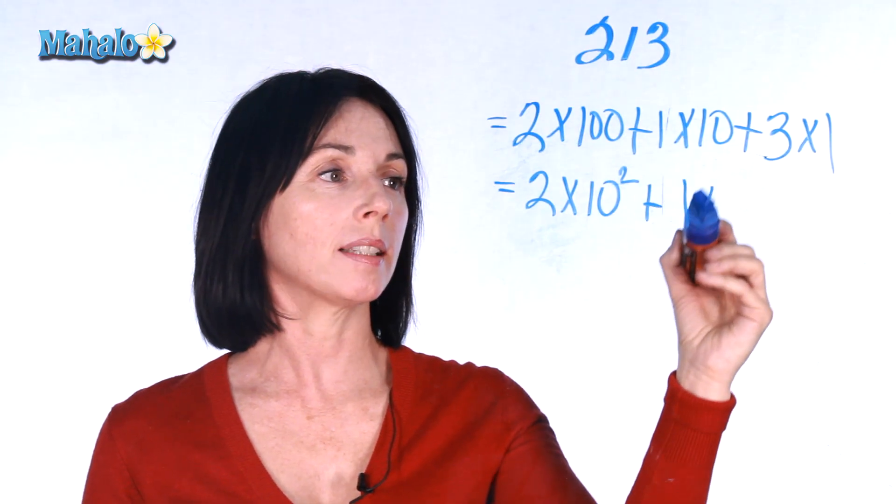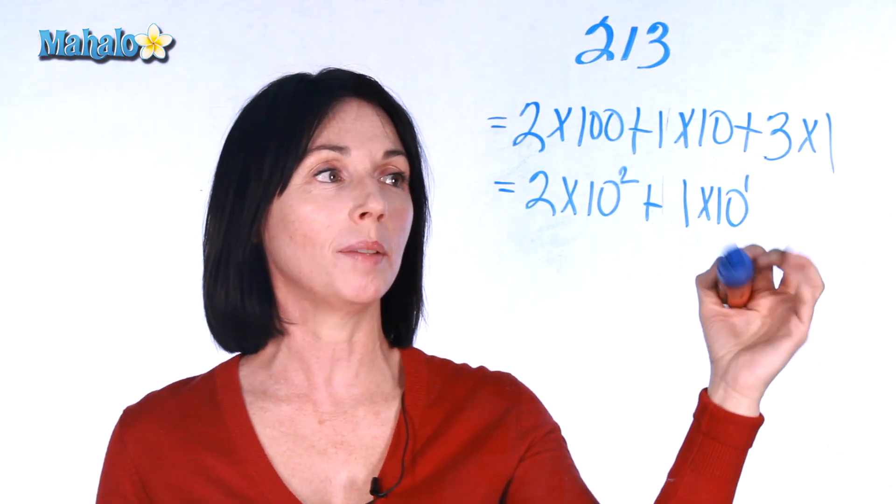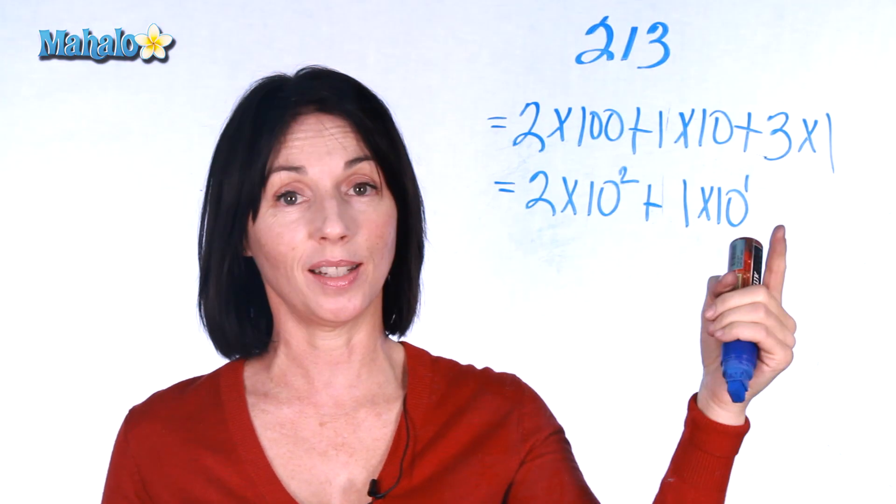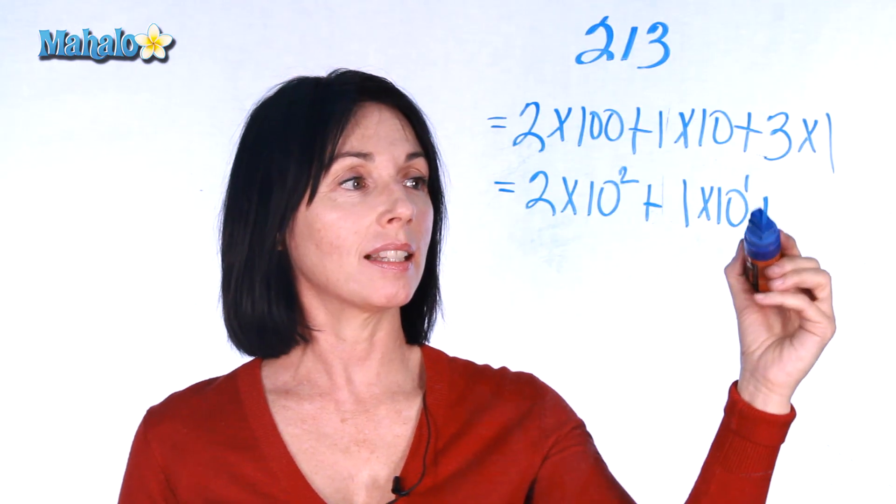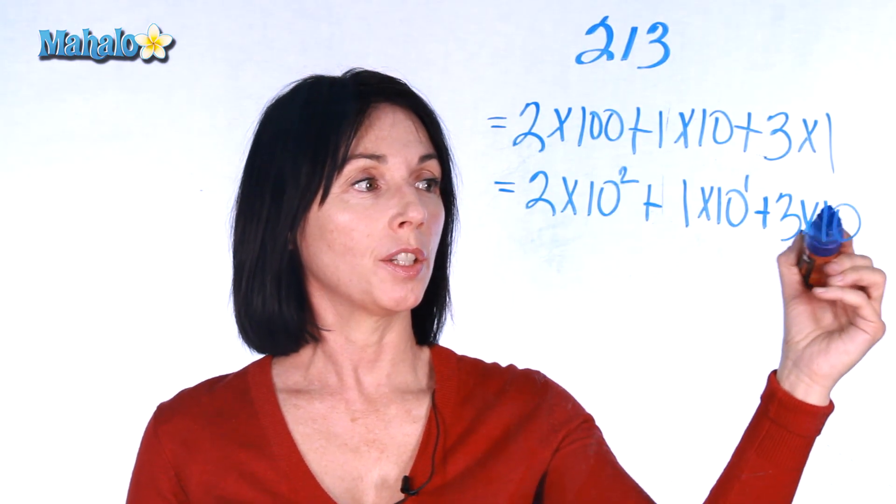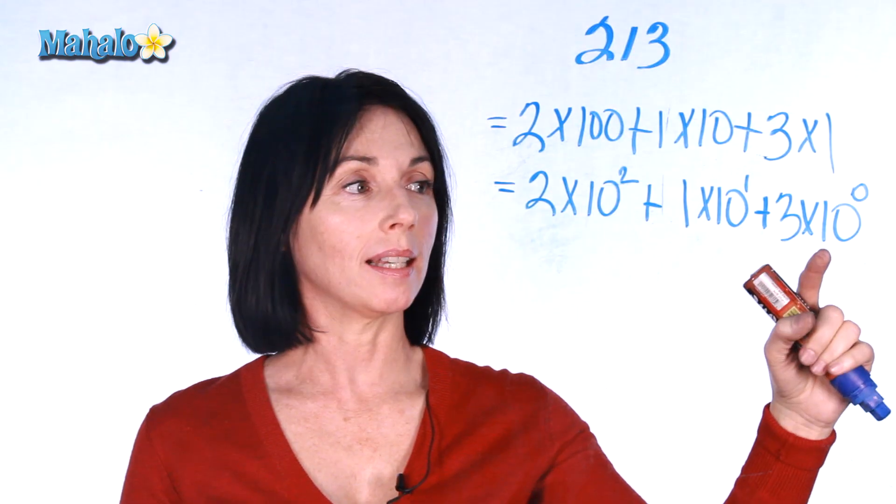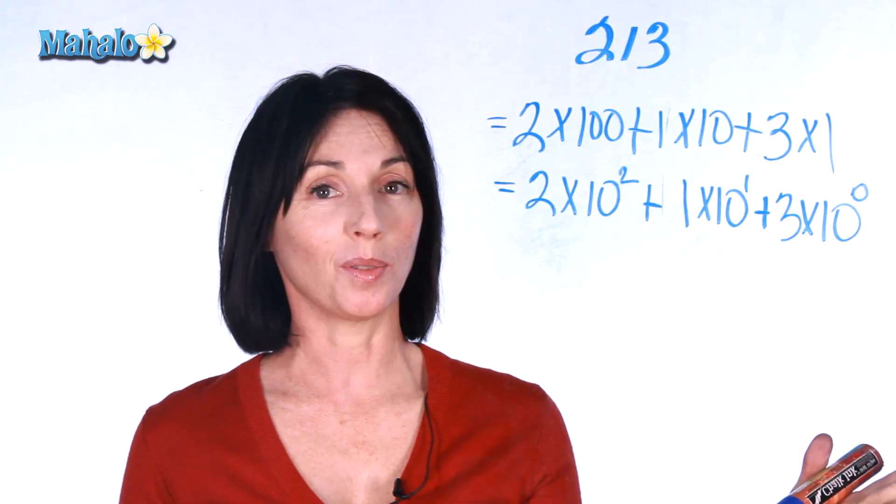And this is equal to 1 times 10 to the power of 1 because 10 to the power of 1 is just equal to 10. And this is equal to 3 times 10 to the power of 0 because 10 to the power of 0 is just equal to 1.